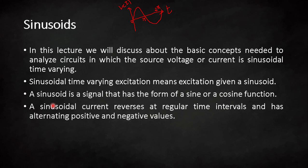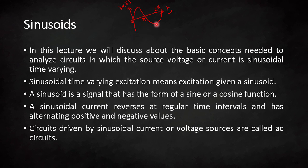A sinusoidal current reverses at regular time intervals. For half of the cycle the value is positive, and for the other half the value is negative. When such a signal — either voltage or current — is given to a circuit, that circuit is known as an AC circuit.